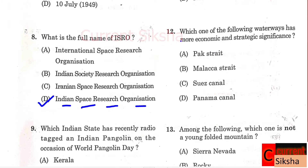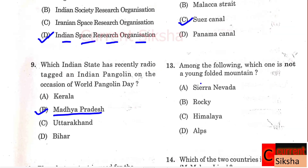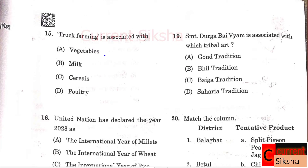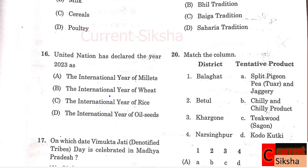Question 11: North Atlantic Ocean. Question 12: Which one of the following waterways has more economic and strategic significance? Correct option C - Suez Canal. Question 13: Among the following, which one is not a young folded mountain? Correct option A - Sierra Nevada. Question 14: Which two countries are divided by the McMahon Line? Answer A - India and China. Question 15: Track farming is associated with? Answer A - Vegetables. Question 16: United Nations had declared the year 2023 as? Answer A - The International Year of Millets.